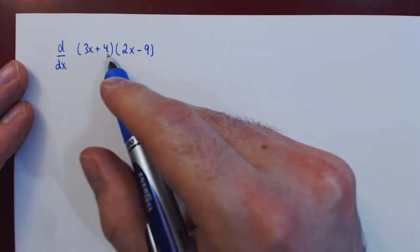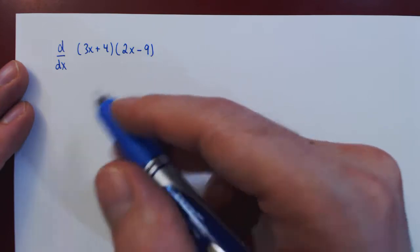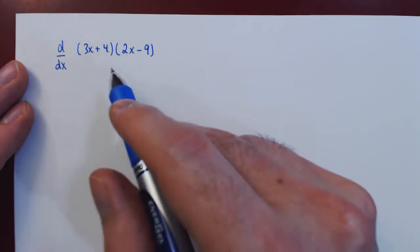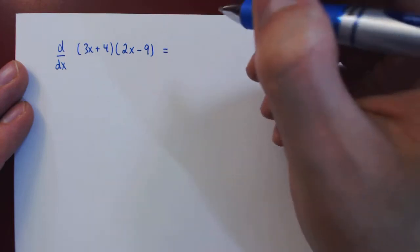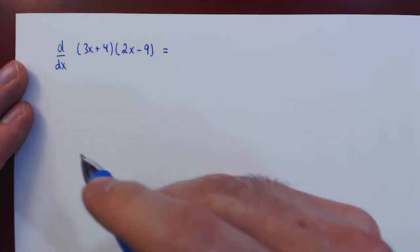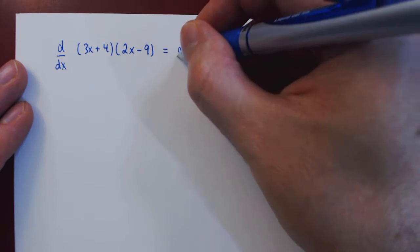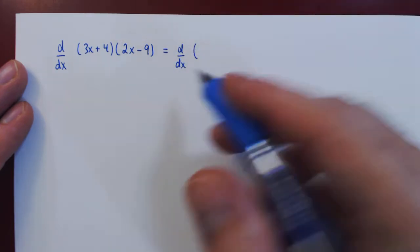So we have here a product between two functions of x, so of course we can directly apply the product rule. But if you notice, before taking the derivative, we could multiply this expression out. So in our first solution, let's do so.